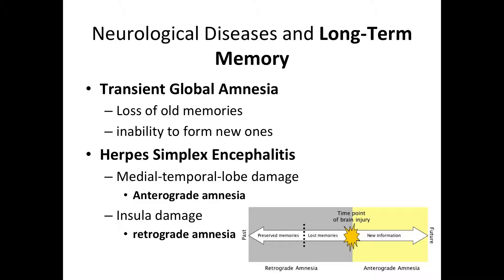Let's talk about memory impairments. Memory impairments result not only from diffuse brain damage but also from brain diseases such as transient global amnesia, herpes simplex encephalitis infections, and Alzheimer's disease.